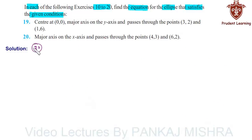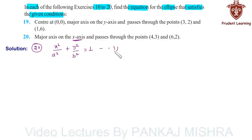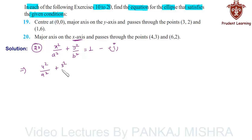In question 20, we are given that the major axis is on the x-axis. Therefore the equation of the ellipse will be of the form x² over a² plus y² over b² equals 1 — call it equation 1. We are also given that this ellipse passes through points (4, 3) and (6, 2), so these two points must satisfy this equation.